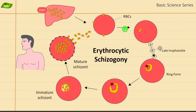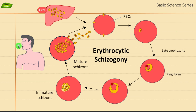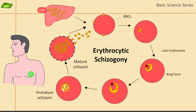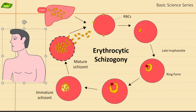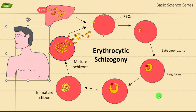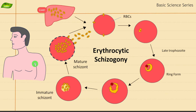In erythrocytic schizogony, RBC merozoites are getting synthesized — the infection is happening inside the RBC, not in liver cells. Everything happens inside the human body. It is an asexual cycle, because gametogony — where gamete formation happens inside the human body and then transfers to the mosquito — comes after this. Here, the immature schizont forms a multi-nucleated structure.